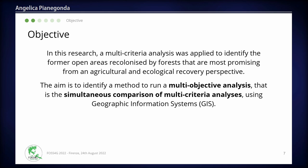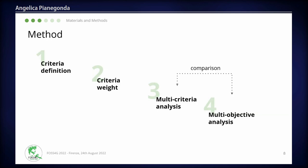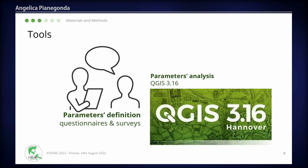The aim was to develop a method to run a multi-objective analysis providing a simultaneous comparison of multi-criteria analyses using a geographic information system. The method was made up of four main stages: criteria definition, criteria weighting, and then comparison between multi-criteria and multi-objective analyses. The tools used were QGIS 3.16, along with questionnaires and surveys to better define the weight of the chosen parameters.